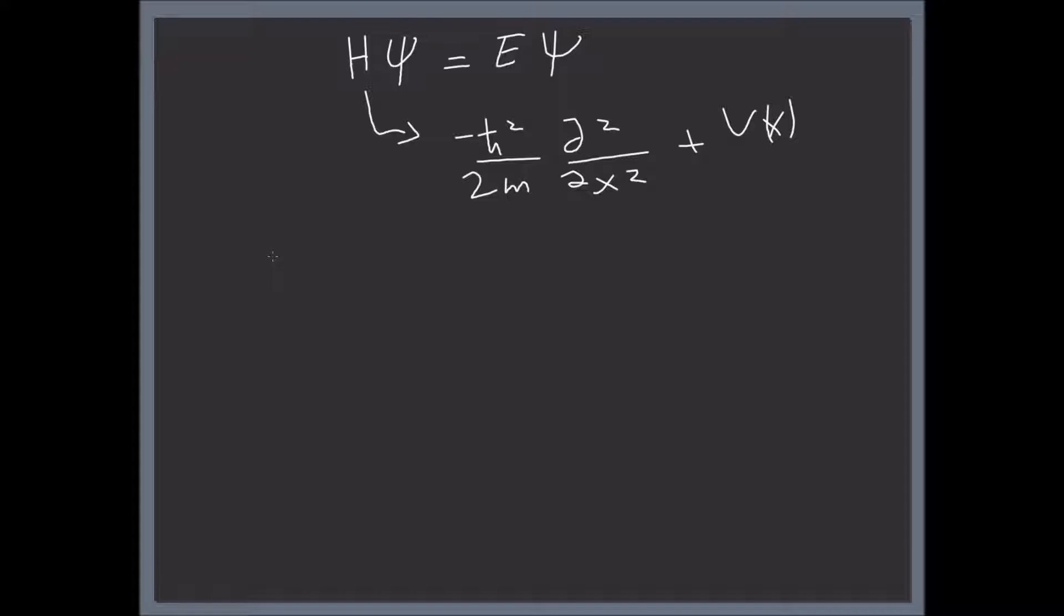Our potential function in this example is V of x equals 0 if x sits between 0 and a, where a is just a constant, and infinity otherwise.